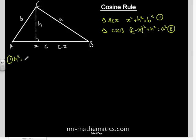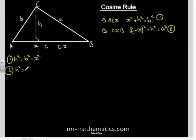We are going to make H the subject of both equations. For equation 1, H squared equals B squared minus X squared. For equation 2, H squared equals A squared minus C minus X, all squared.